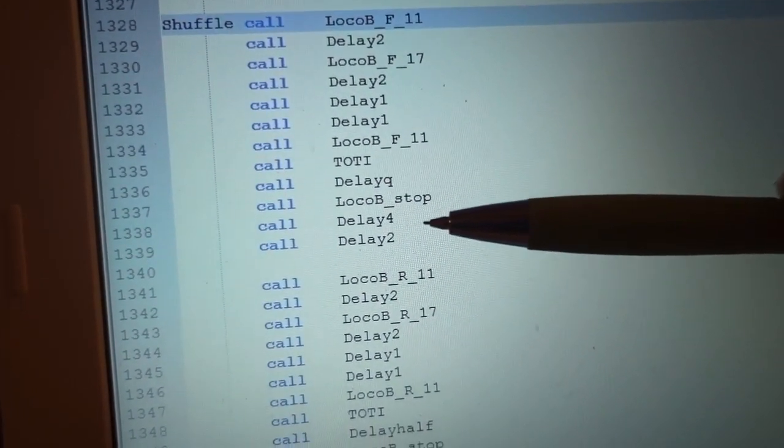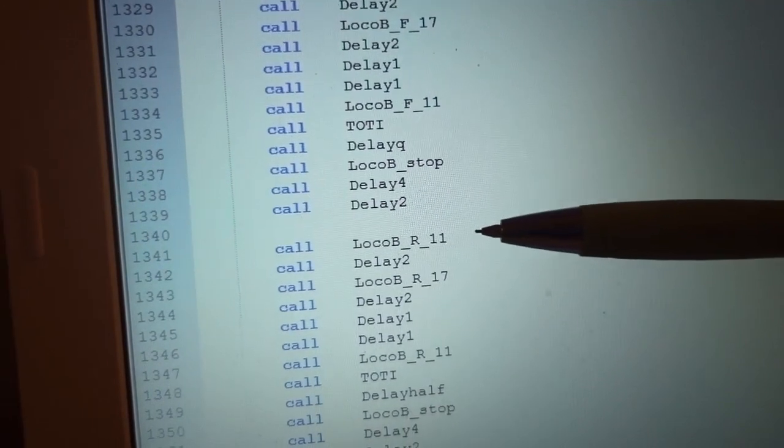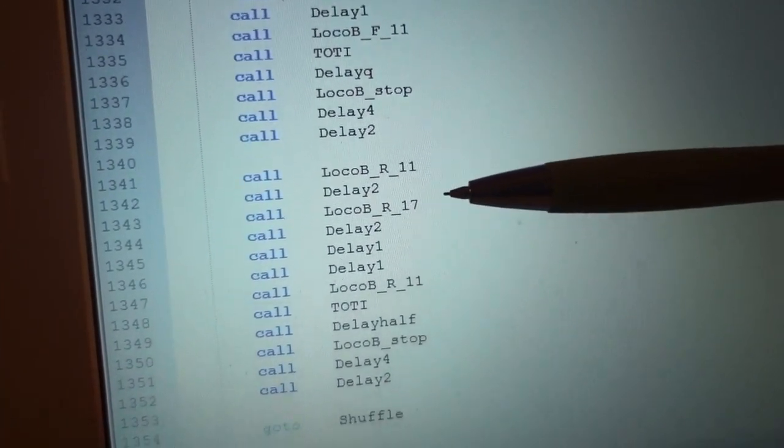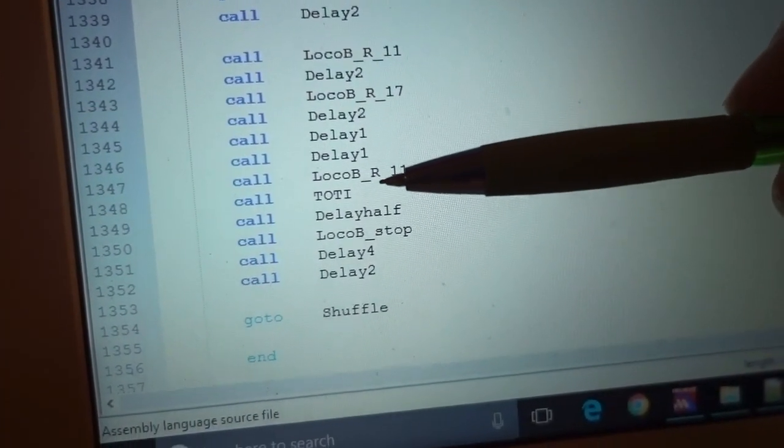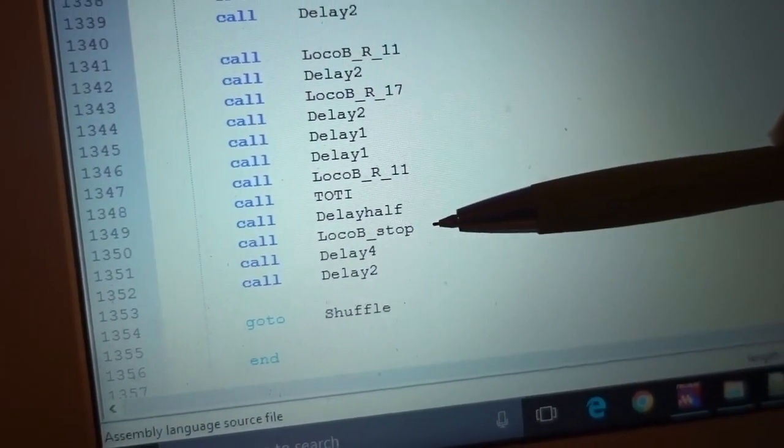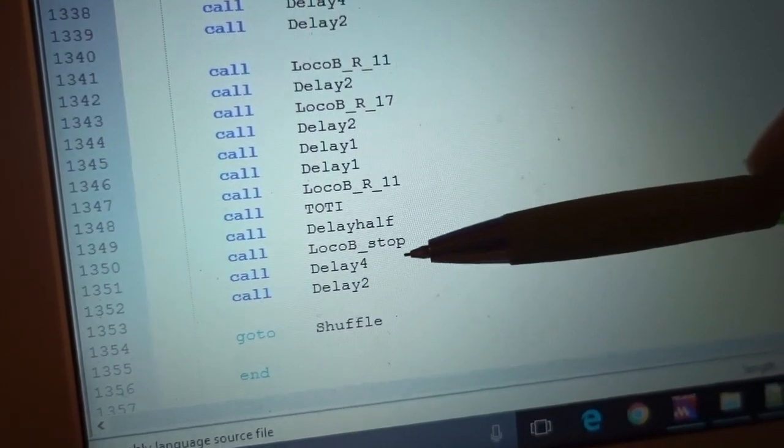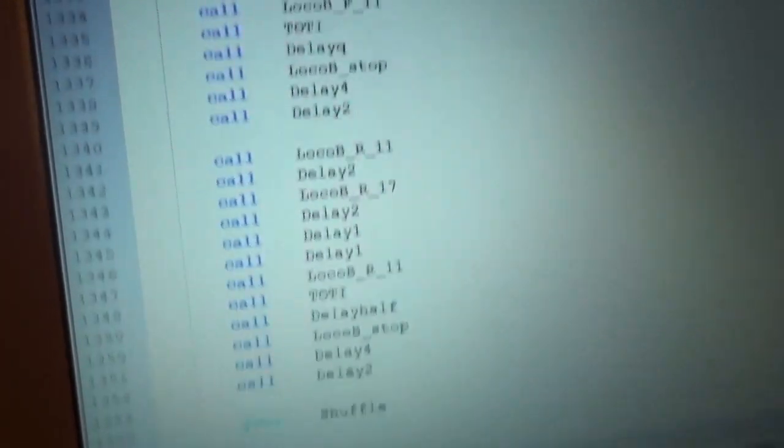Then it waits for six seconds and restarts in reverse at speed step 11, on to speed step 17, back down to speed step 11, and then waits for the TOTI to trip and then stops at the buffers, where it waits for a further six seconds before the cycle repeats.